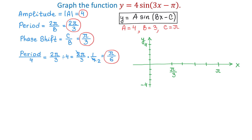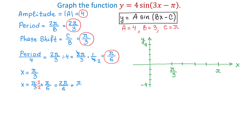We already have the first x-coordinate: x equals pi over 3, which is the point where the cycle starts. To find the next x-coordinate, we add a quarter period: pi over 3 plus pi over 6. Getting a common denominator, 2 pi over 6 plus pi over 6 equals 3 pi over 6, which reduces to pi over 2. So the x-coordinate of the second point is pi over 2.